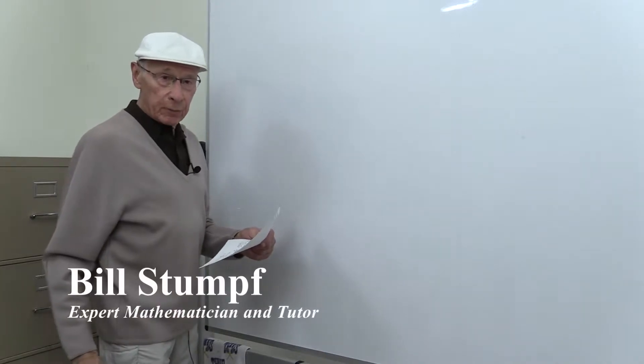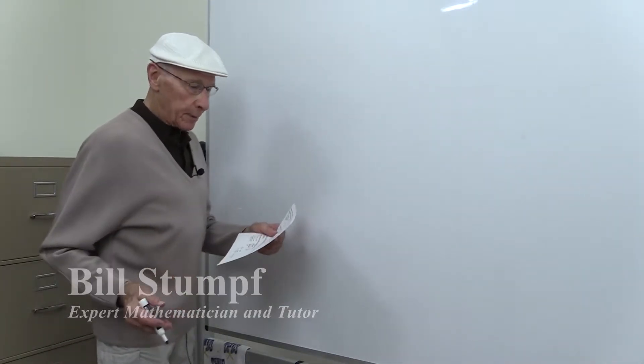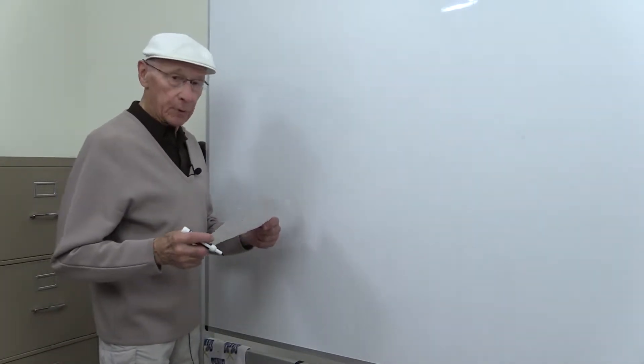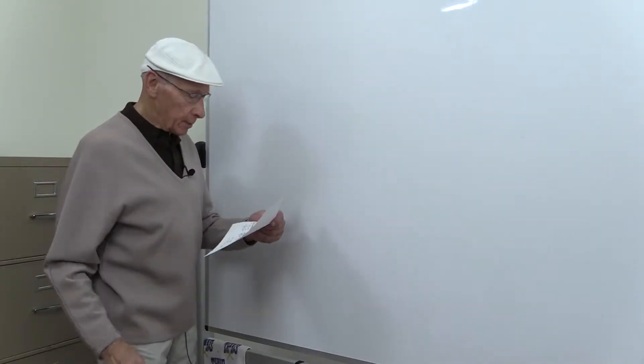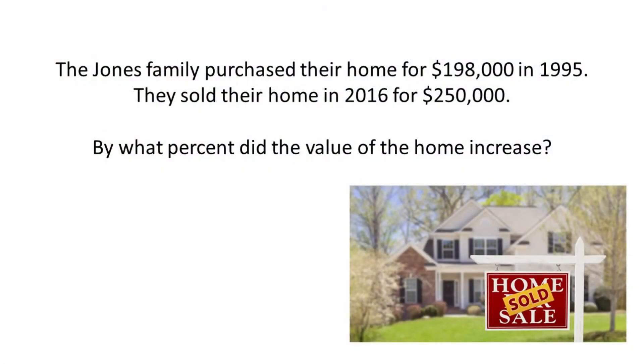This is another real estate example for you GED people that are thinking about going into real estate. The Jones family purchased their home for $198,000 in 1995. They sold their home in 2016 for $250,000. By what percent did the value of the home increase?